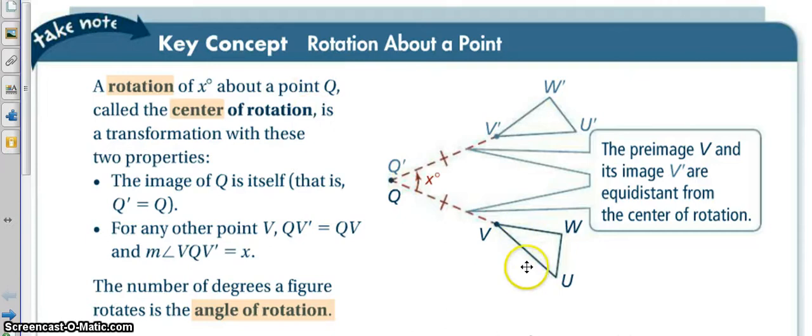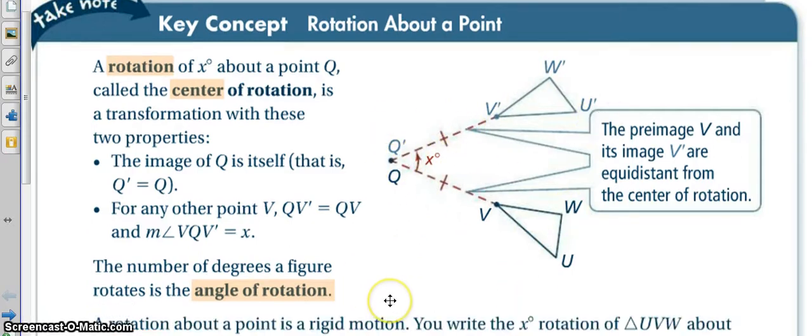We do that with shapes by drawing a line from my rotation point out to my original shape, and then I go that many degrees, however many degrees I've been told to rotate, and I draw that line. It's the same distance away from that rotation point, and then I get my prime point there. I can do that with U and W to get my U prime and my W prime, because every point when we rotate a shape will be rotated the same amount of degrees.